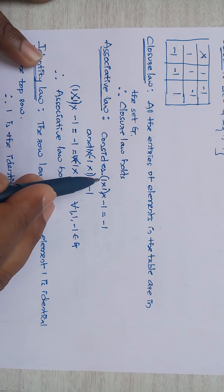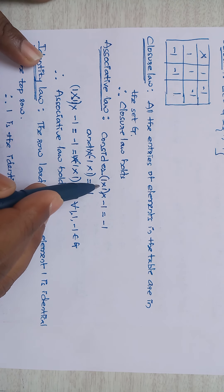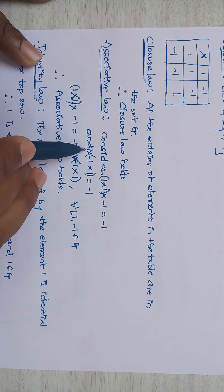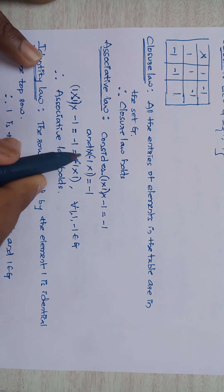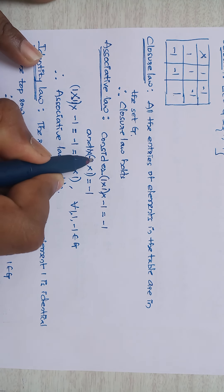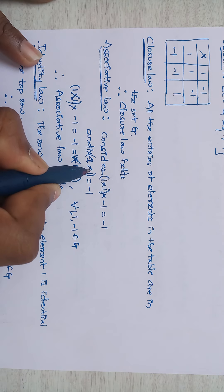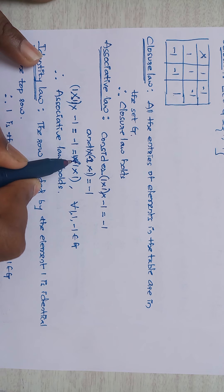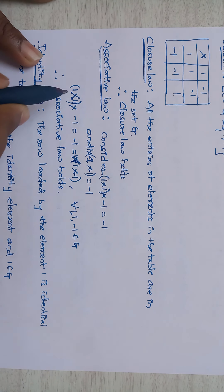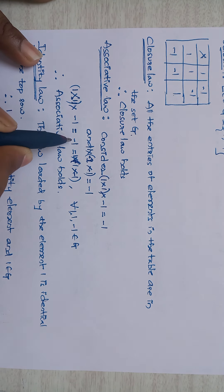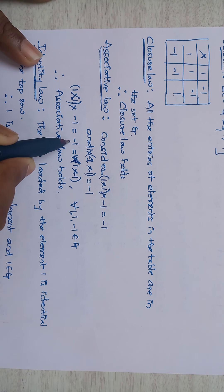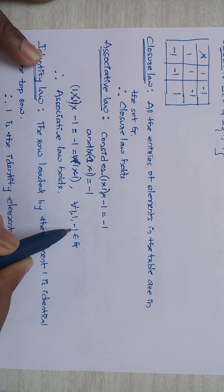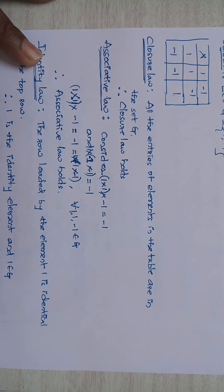Associative law: consider (1·1)·(−1) = 1·(−1) = −1, and 1·(1·(−1)) = 1·(−1) = −1. Both sides equal −1. Therefore for all elements 1, 1, −1 ∈ G, associative law holds.